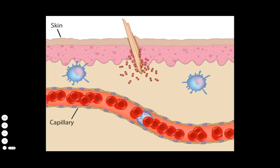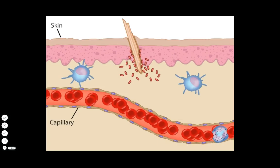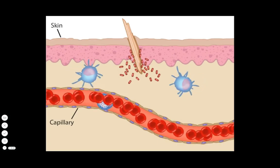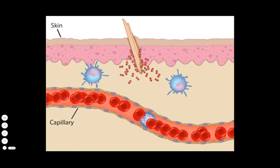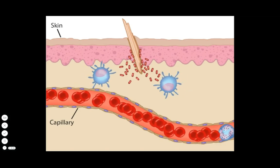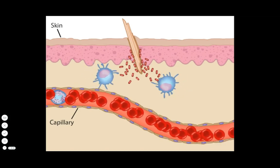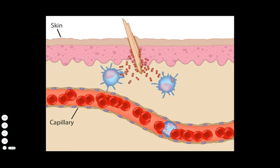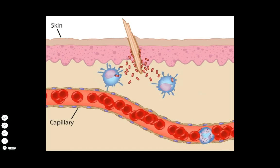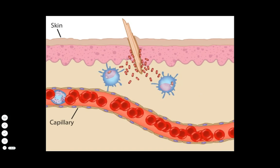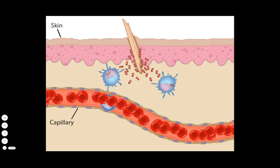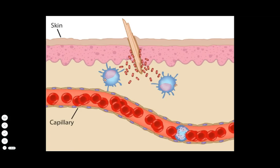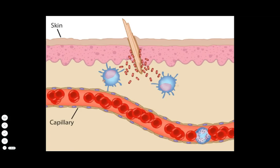Resident immune cells called macrophages may wander into the infected area and engulf the invading organisms. The macrophages digest the material and in this way help clean up the infection. In response to the infection, macrophages release a number of chemicals including those called cytokines.